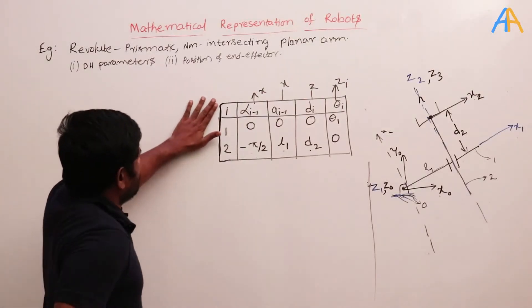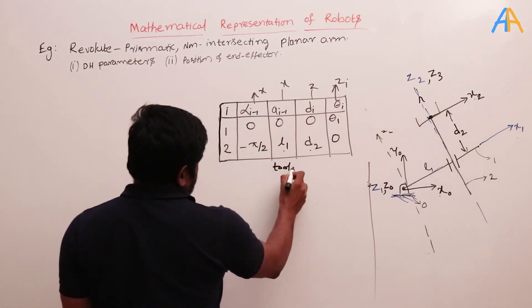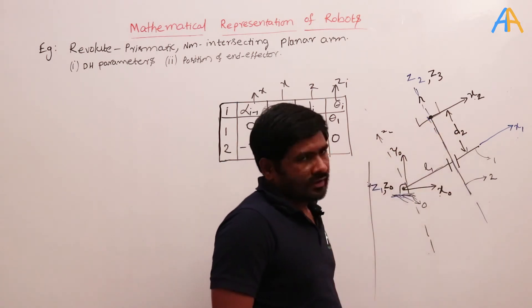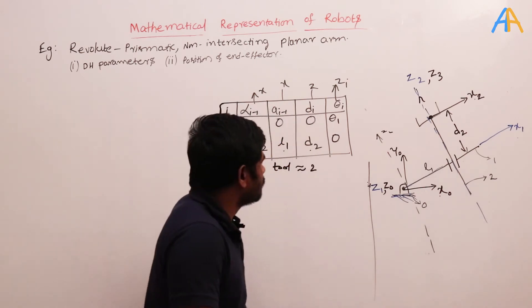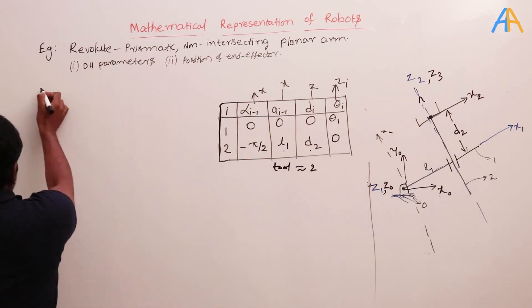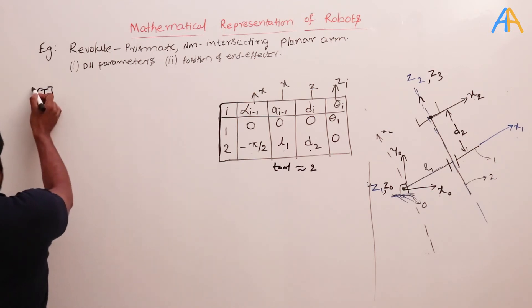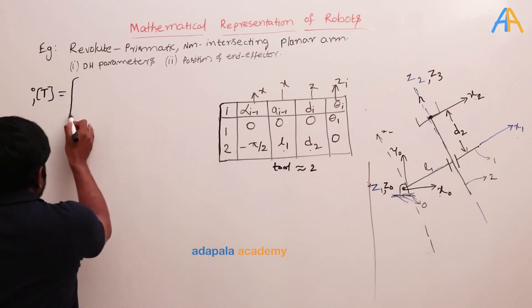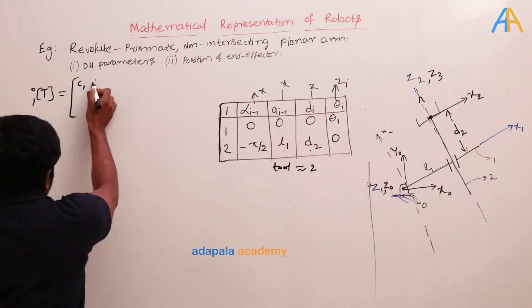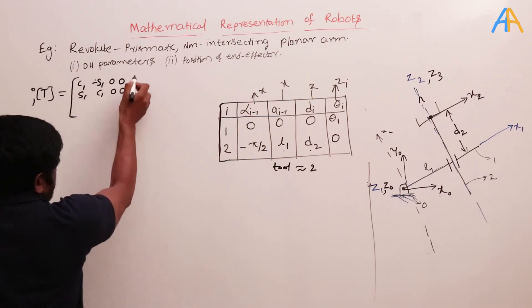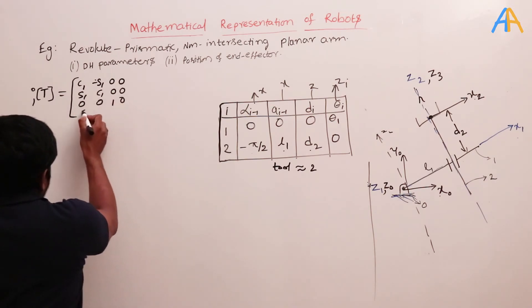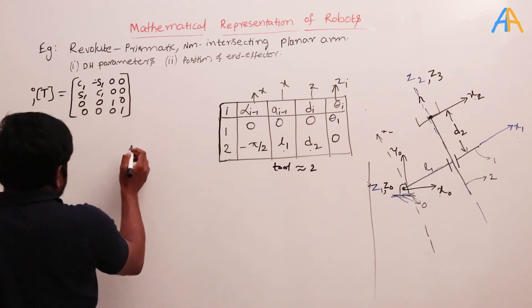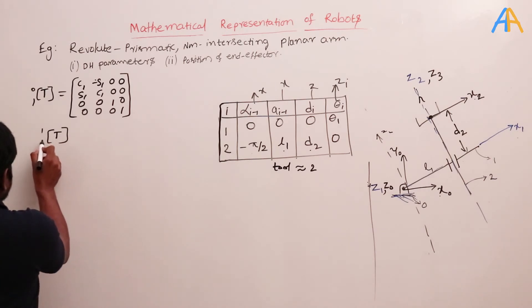Now we find the transformation matrices. The tool is captured at the end of link 2, so we don't need a separate tool frame. For T(0→1), there is only one rotation about the z-axis and no translation, so the matrix is: [c1, -s1, 0, 0; s1, c1, 0, 0; 0, 0, 1, 0; 0, 0, 0, 1].